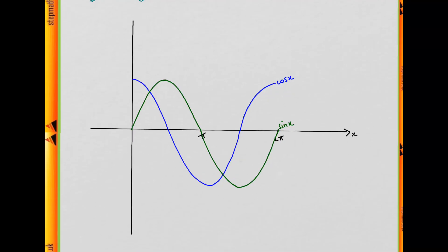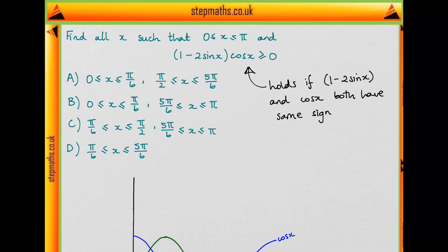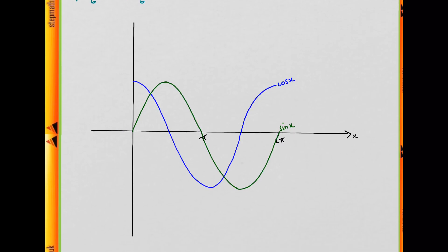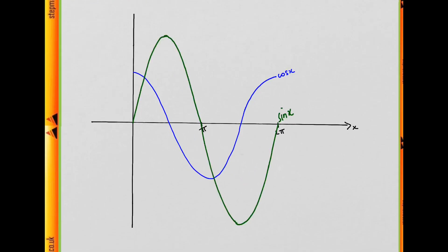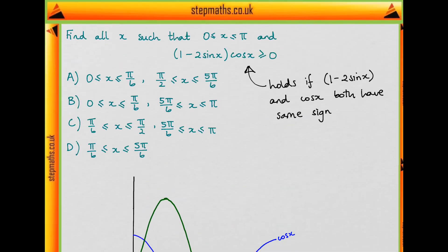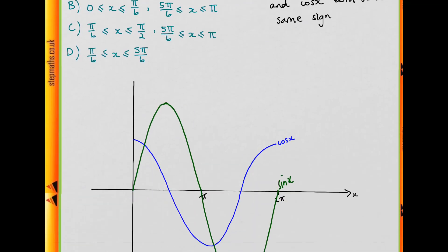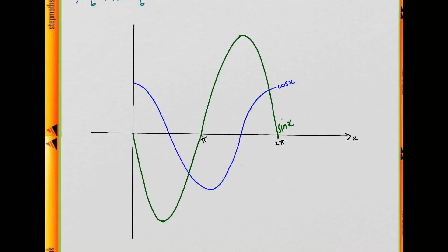So now to turn this sin x into 2sin x, we're going to stretch it in the y direction by a factor of 2. So it'll look a bit like this when we're done. And it's also a minus 2sin x, so we're going to have to turn it upside down, like so.